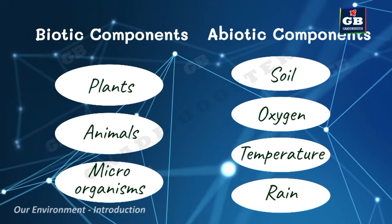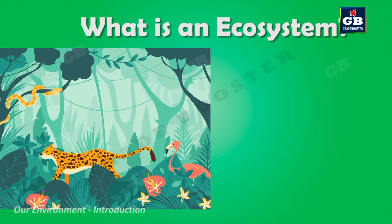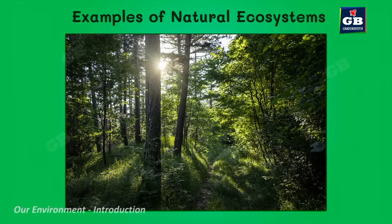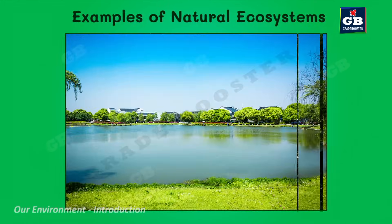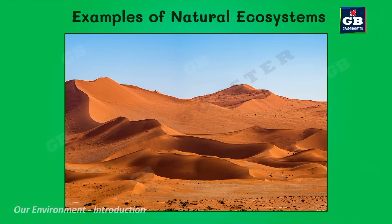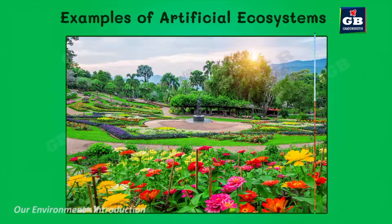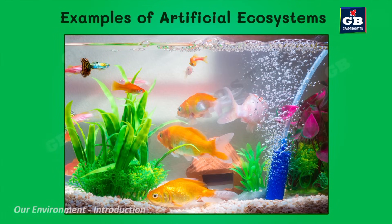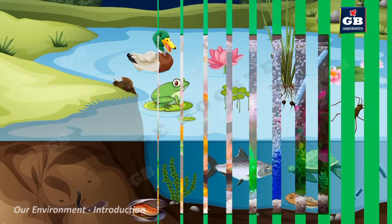The interacting living and non-living components of a particular area form an ecosystem. An ecosystem means biotic components and abiotic components of a specific area. Forests, ponds, and deserts are examples of natural ecosystems, whereas gardens, crop fields, and aquariums are examples of artificial ecosystems.